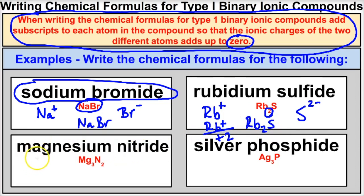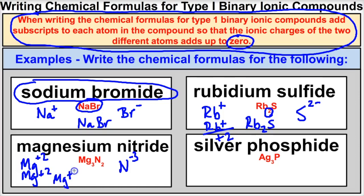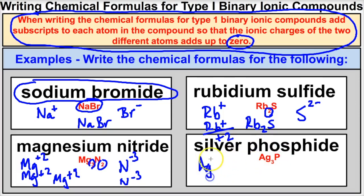For magnesium nitride: magnesium forms positive 2 ions and nitride is N³⁻. These two charges do not add up to zero, so if you have three magnesiums the total charge is plus 6, and if you have two nitrides the total charge is minus 6 — they add up to zero, giving us Mg₃N₂. Similarly, silver phosphide is Ag₃P because silver has a plus 1 charge, and you need three of them to cancel out phosphide's negative 3 charge.